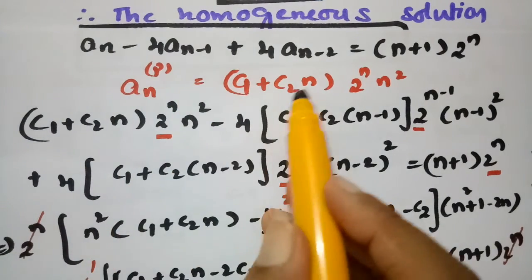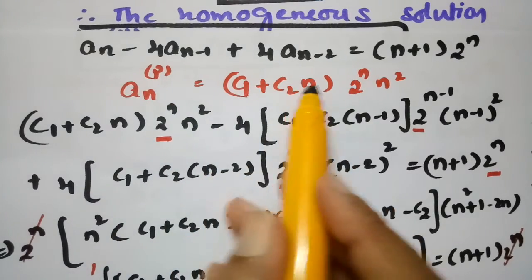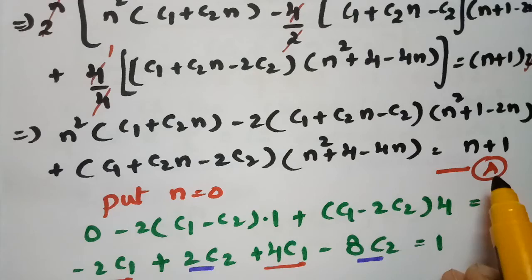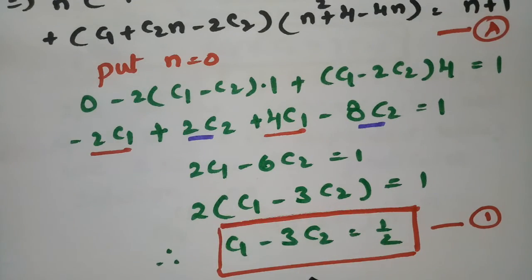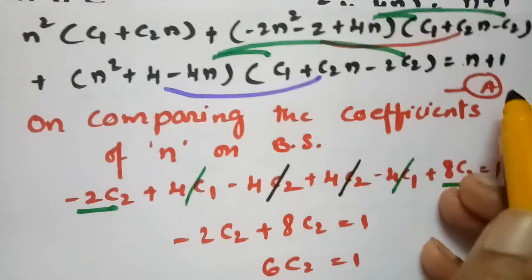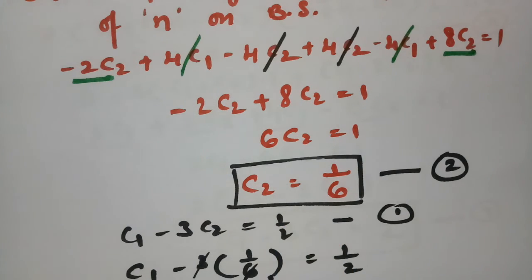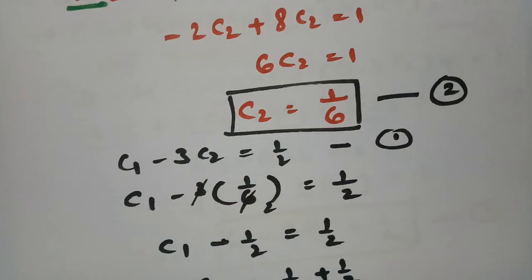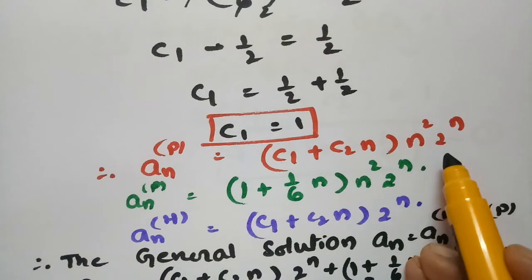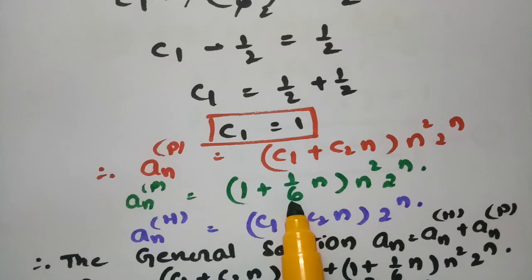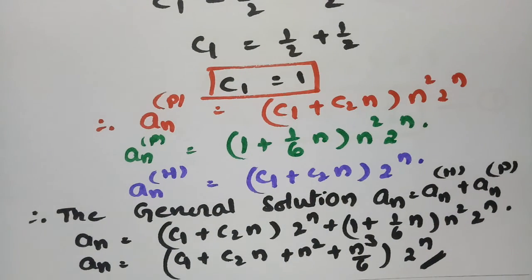Substitute into the recurrence relation, replacing N with N-1 and N-2 to get equation A. Put N=0 to get equation 1, compare coefficients of N to get C2=1/6, substitute back to get C1=1. The general solution is the homogeneous solution plus the particular solution. Thank you for watching — please practice and share with friends.